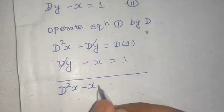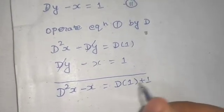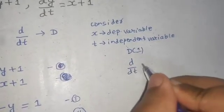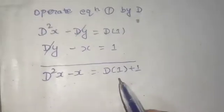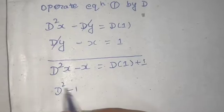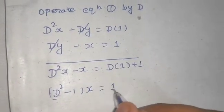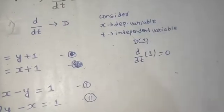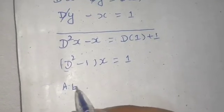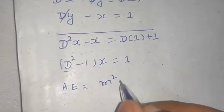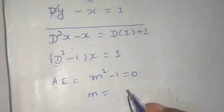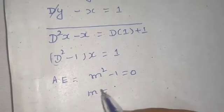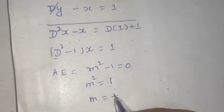We get D²(x) - x = D(1) + 1. Since D(1) means d/dt of a constant, that equals zero. So the equation simplifies to (D² - 1)x = 1. Now we find the auxiliary equation by replacing D with m: m² - 1 = 0, giving m = ±1.